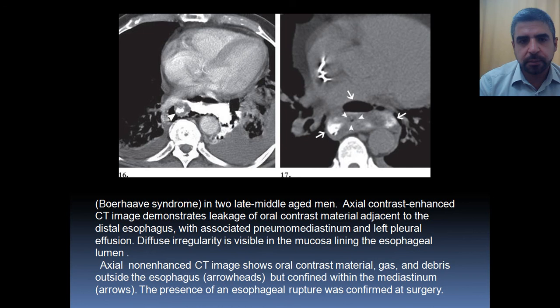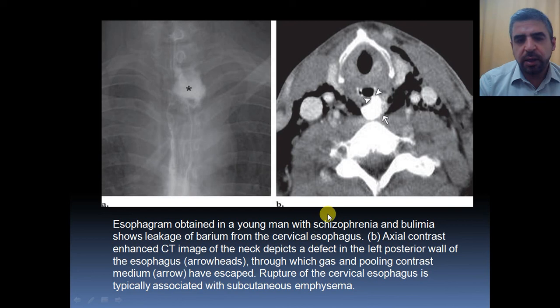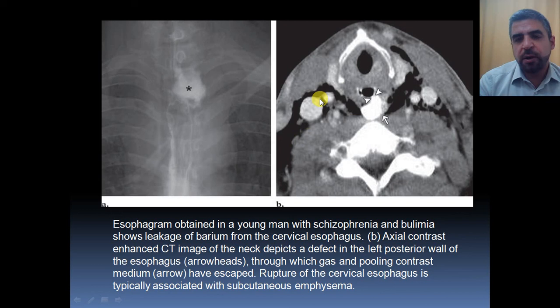Again, you can see here a case of a schizophrenia patient with bulimia. There is evidence of contrast leak from the posterior wall of the hypopharynx and the upper esophagus. There is a large amount of subcutaneous emphysema resulting in crepitus between the soft tissues of the neck, and on swallow studies there is obviously a contrast leak from the esophagus.